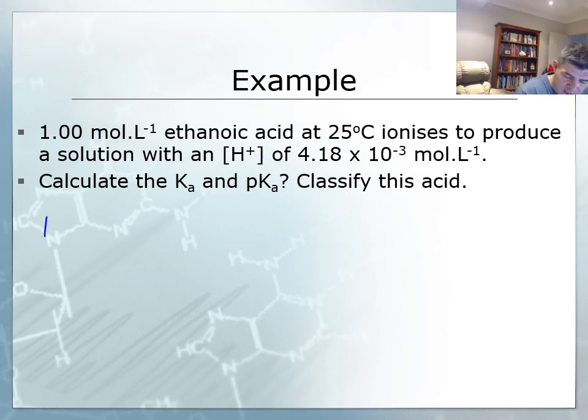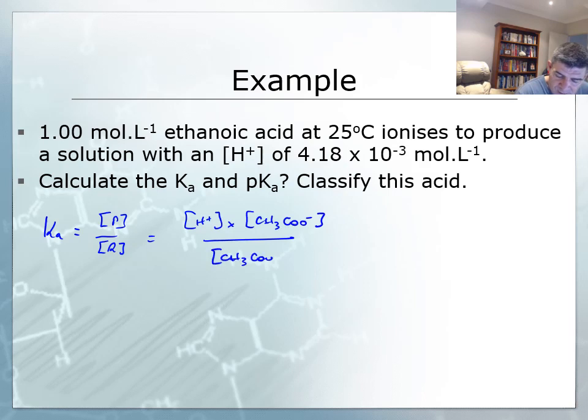So we can calculate the Ka by looking at the concentration of products over reactants, leaving the water out. So this is going to be H plus multiplied by the concentration of CH3COO minus over the concentration of CH3COOH.